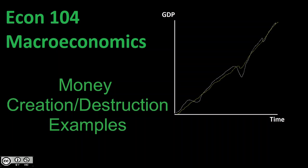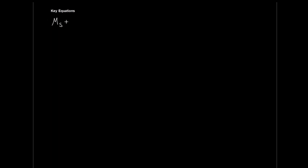Let's jump over and kick off with some examples. First, let's remind ourselves of our key equations. Our money supply altogether is going to be all of our deposit money plus all of our currency — all of our cash in circulation. So our money supply equals deposits plus cash.